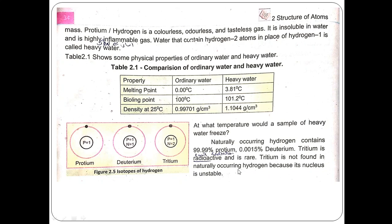Hydrogen-1 has atomic number 1 and mass number 1, with 1 proton and 1 electron in the nucleus. For hydrogen-2 (deuterium), the mass number is 2, with 1 proton and 1 electron. Number of neutrons = mass number minus atomic number = 2 minus 1 = 1 neutron.